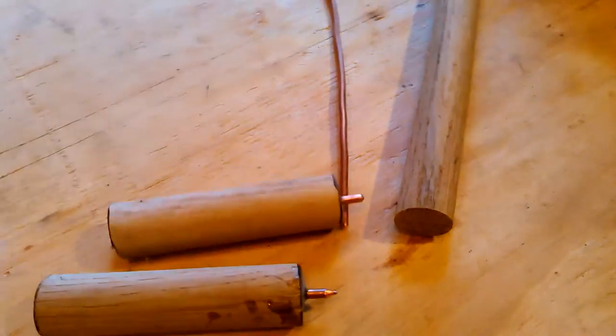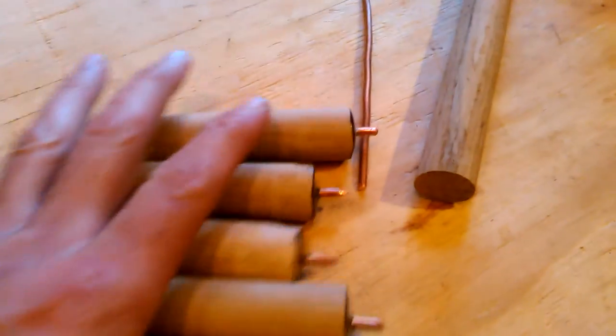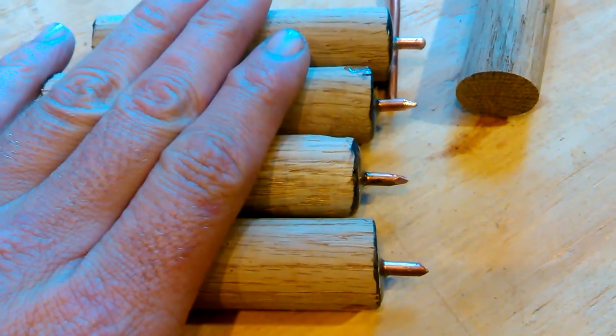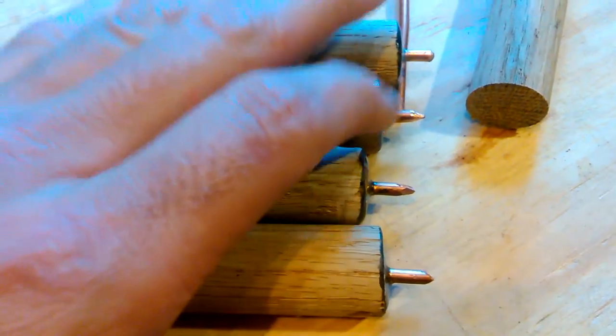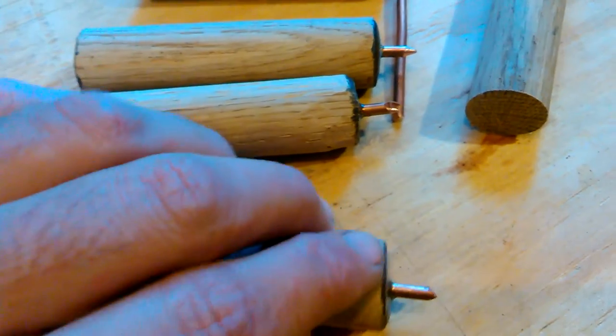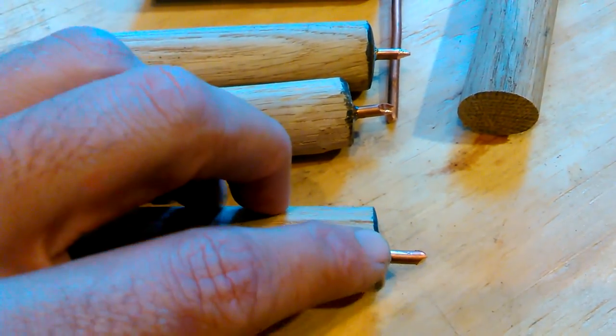I've actually got four in my set - they're just different points. One is a blunt tip, one is a sharp tip, one is like a pyramid, and then one is just like a chisel.